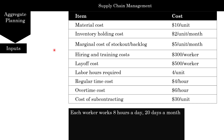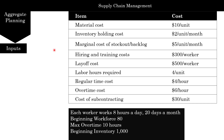Each worker works eight hours a day, 20 days a month. Your beginning workforce is 80 workers. Your maximum overtime is about 10 hours — so each worker can work 10 extra hours a month. Your beginning inventory is 1,000 units. And your ending inventory has to finish at 500 units. These are all required inputs given to you.